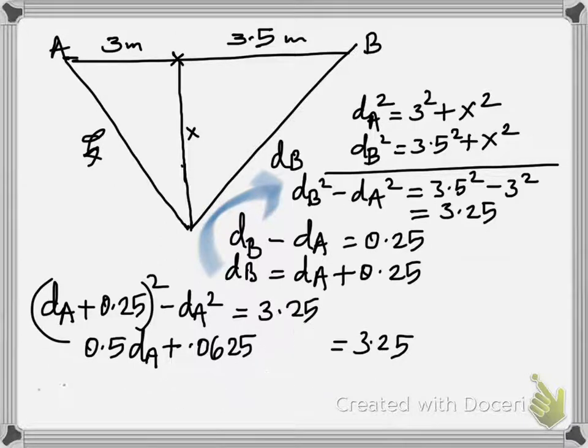First, you have d_A squared is 3 squared plus x squared from this triangle here. And then from the second one on the right side, you have the other one. Then take the difference, you get this.